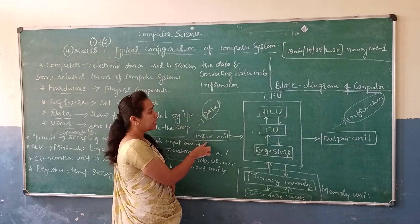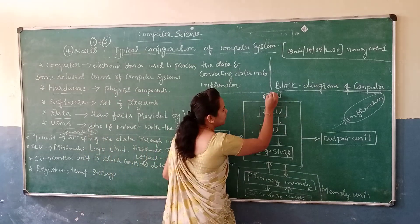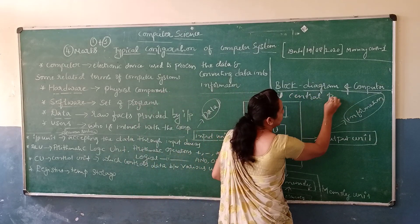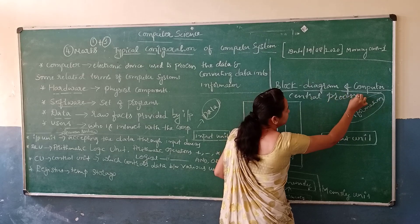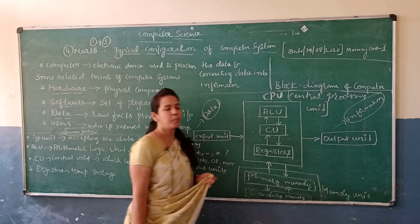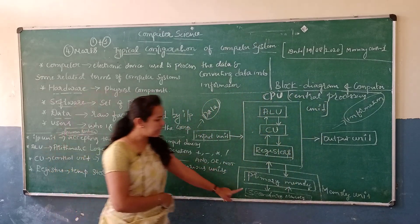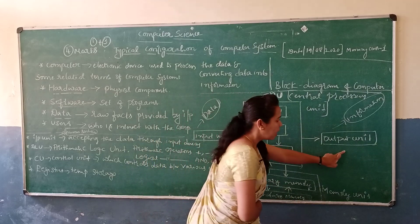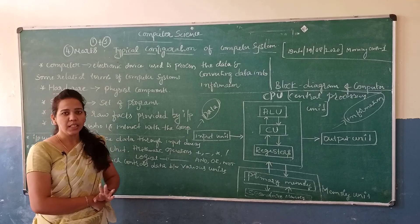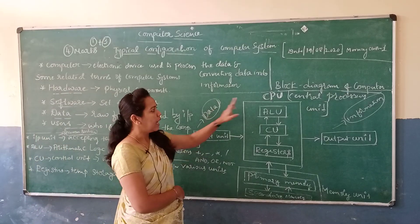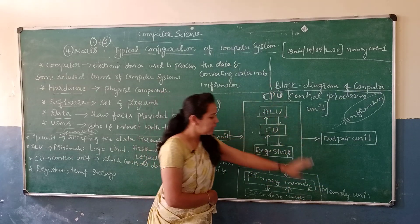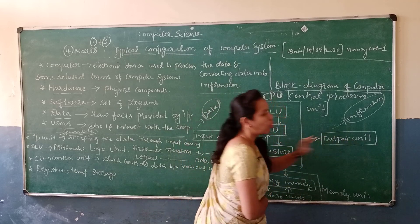Here is the block diagram of the computer. It has four components. One is the input unit. Another one is CPU — central processing unit. Next is the memory unit. Another one is the output unit. There are four components which come in the computer: input unit, CPU, memory unit, and output unit.